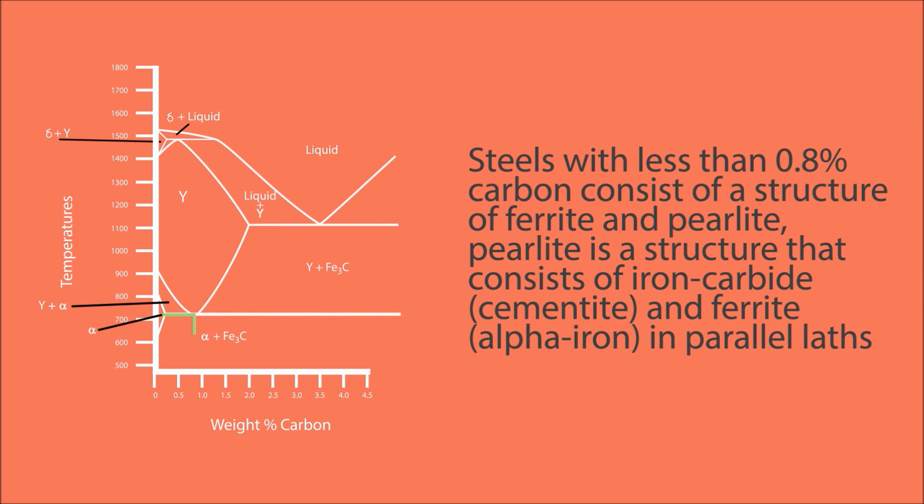Steels with less than 0.8% carbon consist of a structure of ferrite and perlite. Perlite is a structure that consists of iron carbide (cementite) and ferrite (alpha iron) in parallel laths.